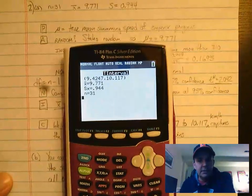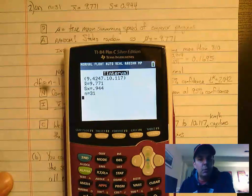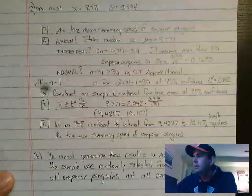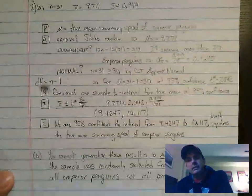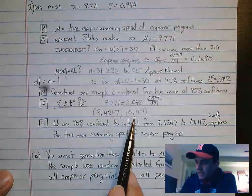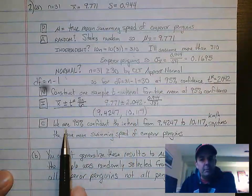Our confidence level is 0.95. We calculate. And that gives us eventually 9.4247 to 10.117. So we're going to copy those numbers down exactly. 9.4247, 10.117.